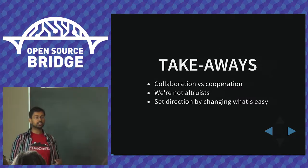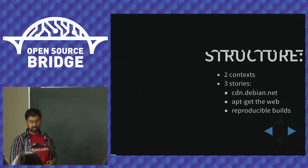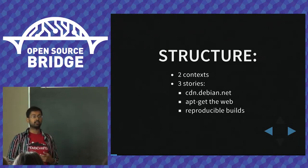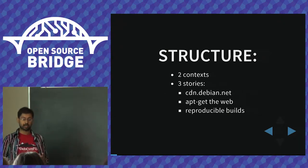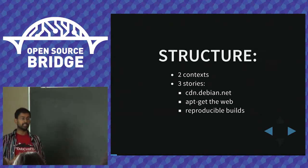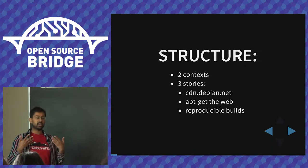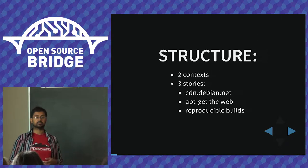The structure of this talk is a little background on Debian first, then a quick refresher on economics, and then three stories from Debian that will get pretty technical — but hopefully with enough explanation of the technical details to see the economic reasons why these projects did and didn't succeed.